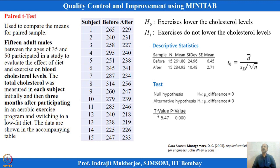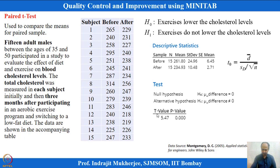We use paired t-test whenever there is high correlation between samples — meaning we take two readings from the same sample. For example in manufacturing, hardness testing machines with different tips: whether readings differ when using different tips is confirmed with paired t-test because the sample remains the same. On the same sample using two methods, we compare which gives higher reading or whether they give the same hardness. This type of analysis is required for such comparisons.